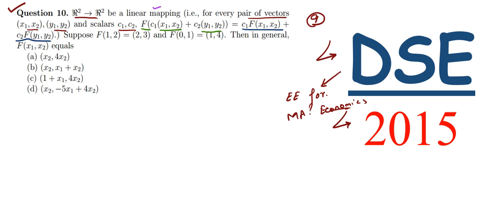Now suppose F(1, 2) = (2, 3) and F(0, 1) = (1, 4). Thus in general, F(x₁, x₂) equals...